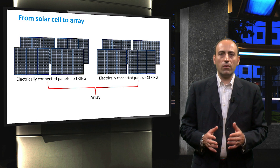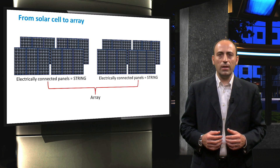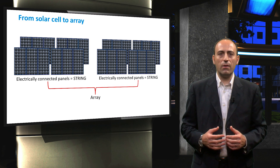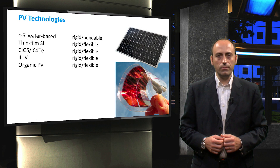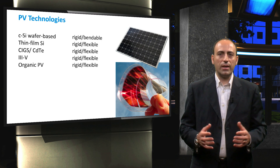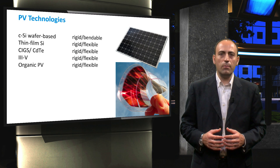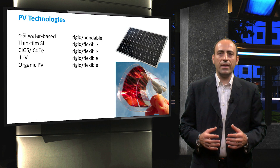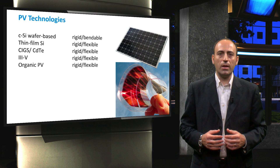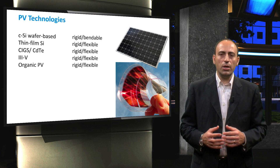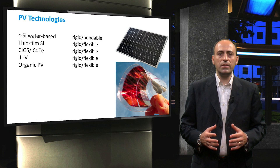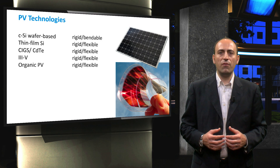When two or more strings are connected in parallel, they again form an array. By connecting multiple strings in parallel, the output current of the PV array is increased. There are different technologies available for designing a PV system, each with their advantages and drawbacks, and these technologies can be found on the market today.